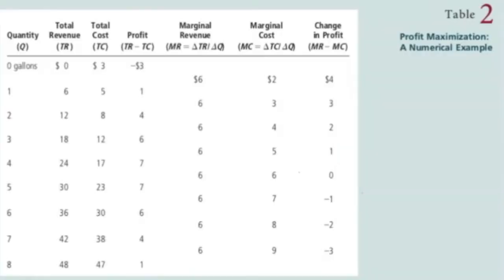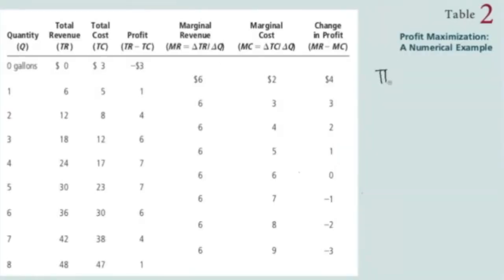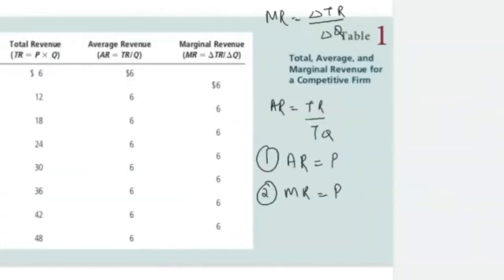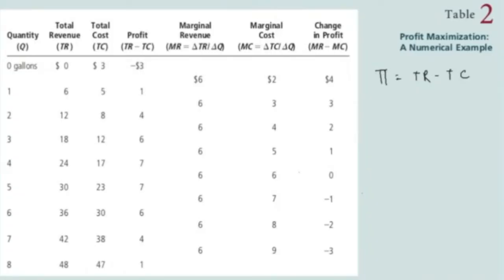The next important thing is profit maximization. Profit is simply the difference between total revenue and total cost. Every firm and every company in this world wants to have as much profit as possible — their ultimate objective is to maximize profit. From this table we are going to understand at which point a competitive firm gets maximum profit. We will look at different values of profit at different units of quantity.